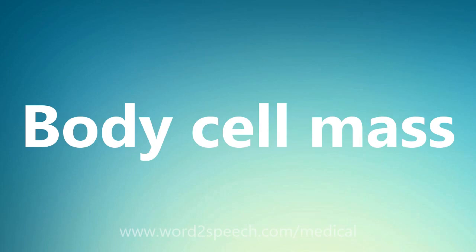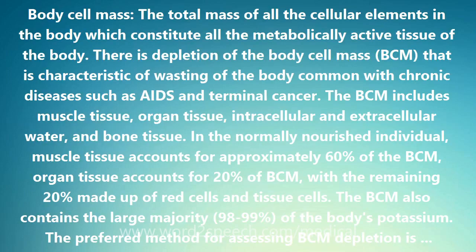Body cell mass — the total mass of all the cellular elements in the body which constitute all the metabolically active tissue of the body. There is depletion of the body cell mass, BCM, that is characteristic of wasting of the body, common with chronic diseases such as AIDS and terminal cancer.